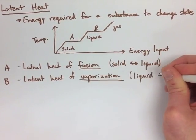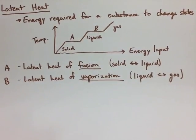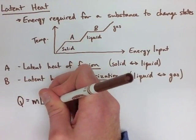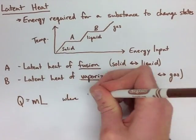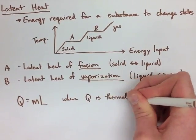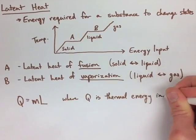Now we have a little bit different formula for this thermal energy. We have Q equals ML, where Q is the thermal energy in joules, M is the mass in kilograms, and L is the latent heat.